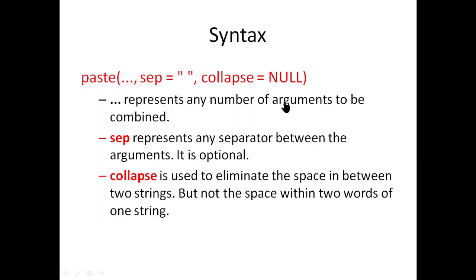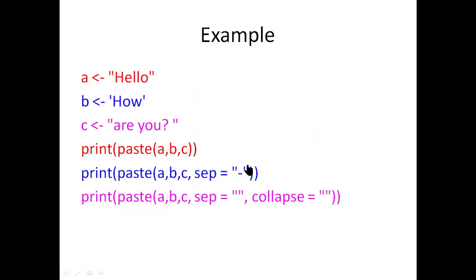Then collapse — you can use it. We will eliminate collapse; it will be a null argument because there is a gap. We will pass: 'hello', 'how', and 'are you' — different words. Using double quotation or single quotation with paste function, we just combine them. This is the result: we combine strings using the separator operator and collapse.